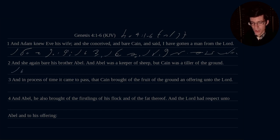And she again bear his brother Abel. And Abel was a keeper of sheep. I believe that was it. Let's see here. A keeper of sheep. Just want to make sure it wasn't a brief form.